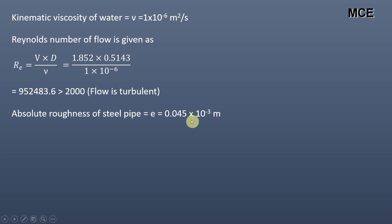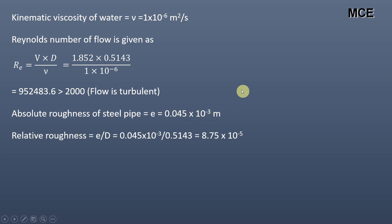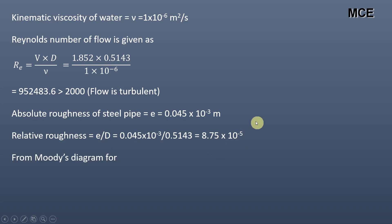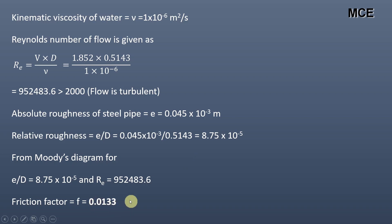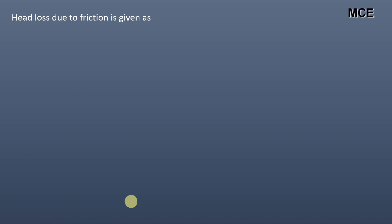Absolute roughness of steel pipe is equal to 0.045 into 10 raise power minus 3 meter. Relative roughness is given as absolute roughness divided by duct diameter, which equals 8.75 into 10 raise power minus 5. Using Moody's diagram for relative roughness equal to 8.75 into 10 raise power minus 5 and Reynolds number equal to 952,483.6, we get the value of friction factor equal to 0.0133.